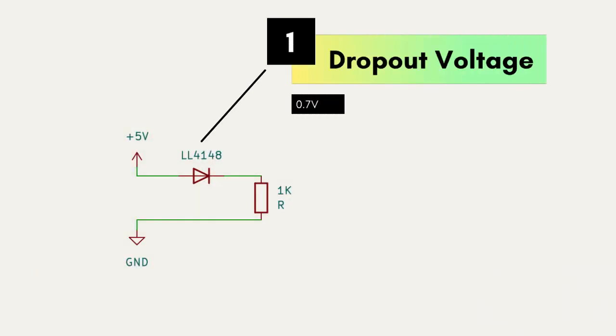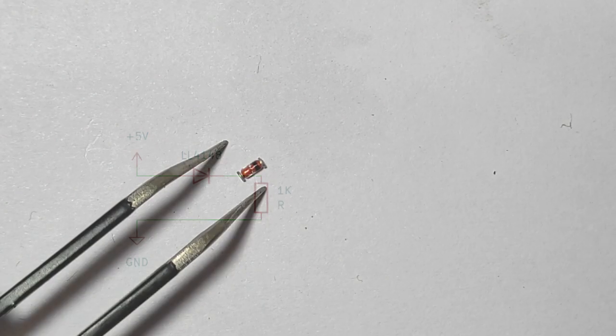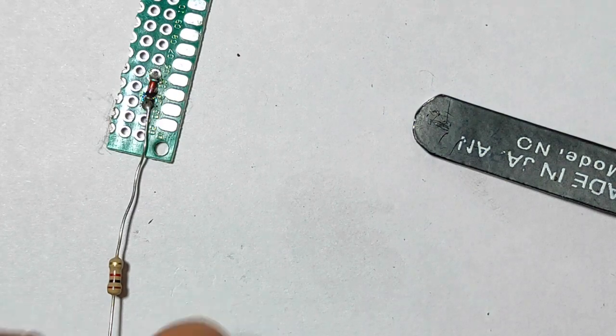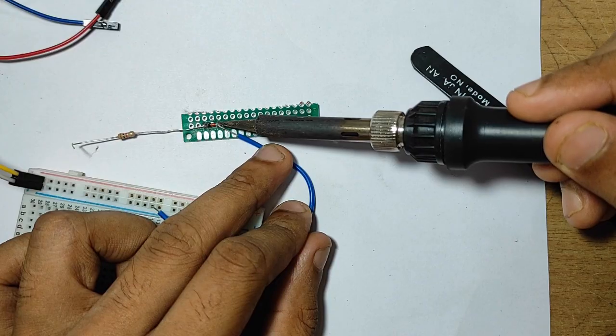Connect the diode as shown in the circuit diagram. The dropout voltage of this diode is 0.7 volts. Solder the 4148 diode with the resistor.